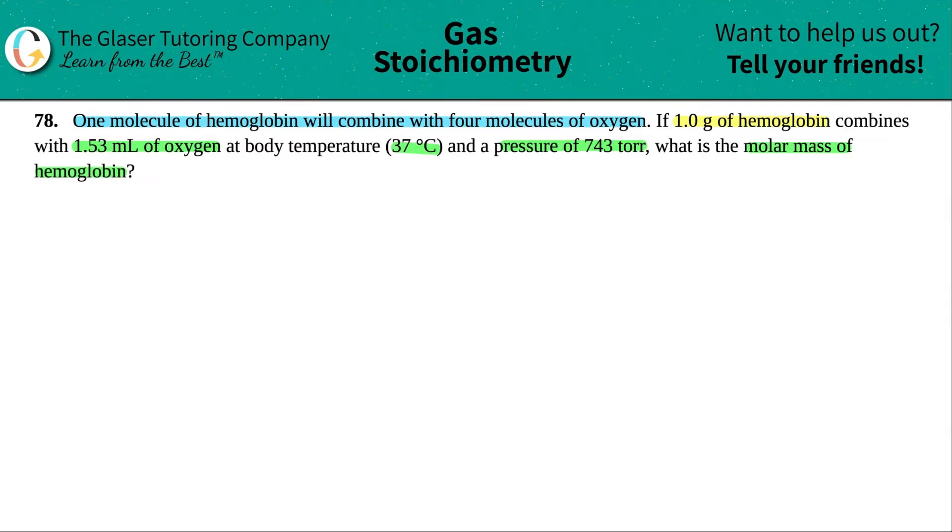Okay, so in this case I'm looking and I don't really see a balanced equation. Usually if they give us two compounds, hemoglobin and the molecule oxygen, I'll try to make a balanced equation. But the only thing that they said was that one molecule of hemoglobin will combine with four molecules of oxygen. I guess I'll keep that in the back of my head. What I'm going to do here is I'm just going to have one section for hemoglobin and the other section for the oxygen. Now remember, oxygen is a diatomic, so that's O2. They did tell us that we had a mass of the hemoglobin, so I know that I have an M value here of 1.0 grams.